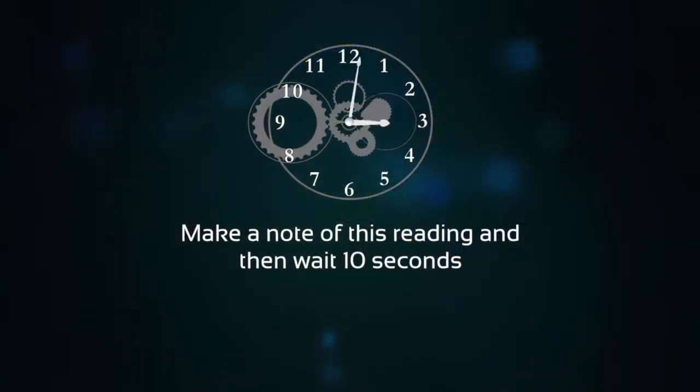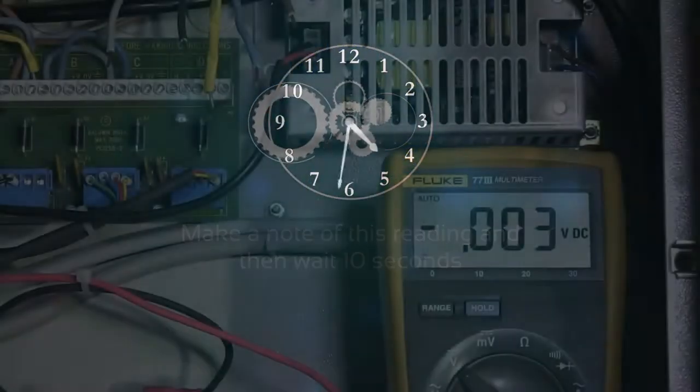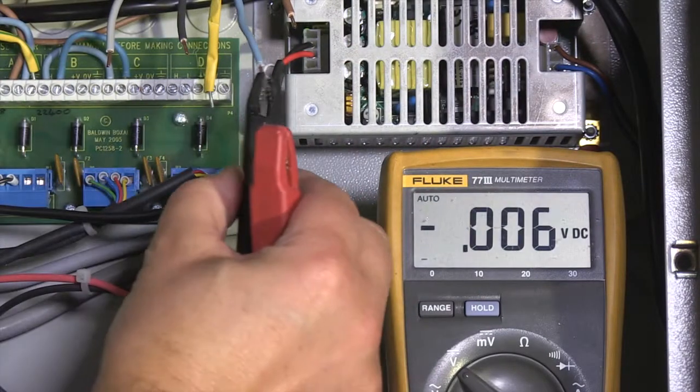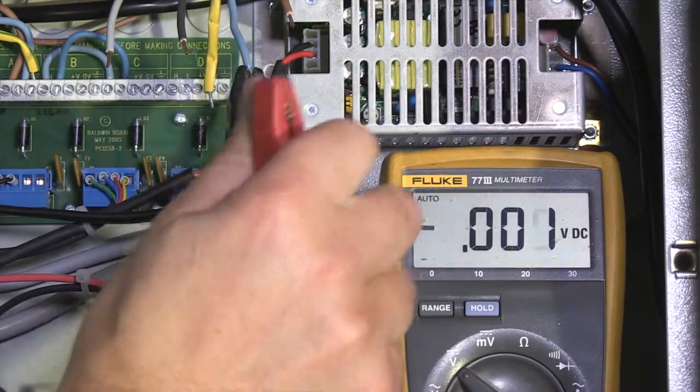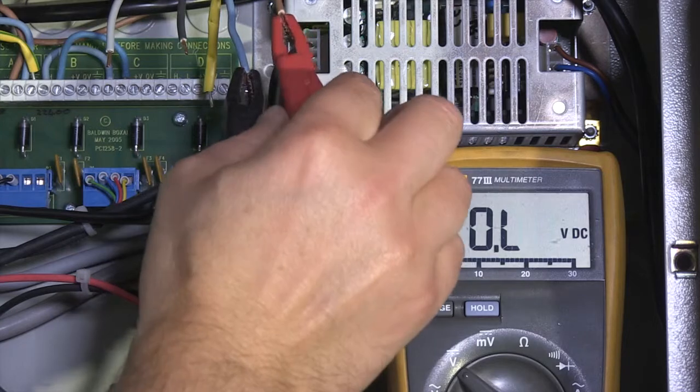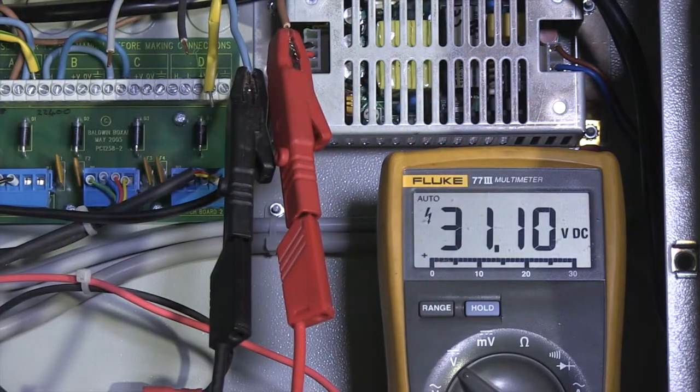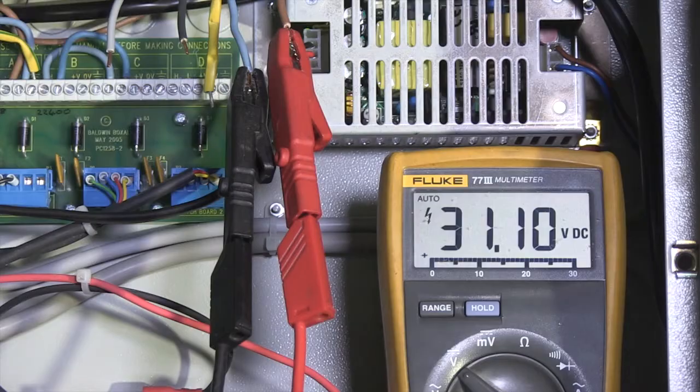You will need to make a note of this reading. Wait for 10 seconds and then measure the return voltage on the 0 volts and plus volts on the return cable. This should be no more than 8 volts lower than the reading at the A terminals.